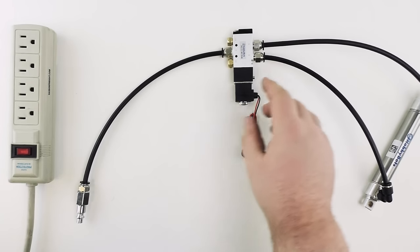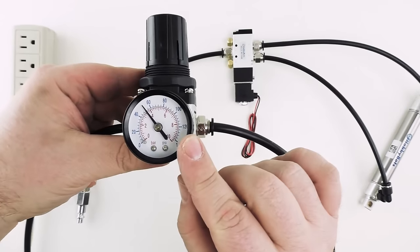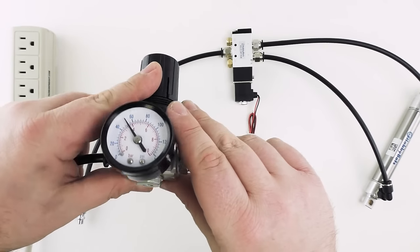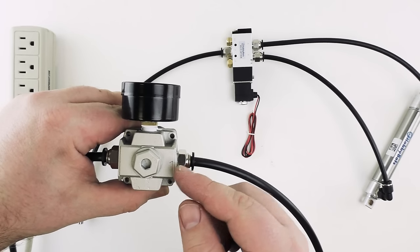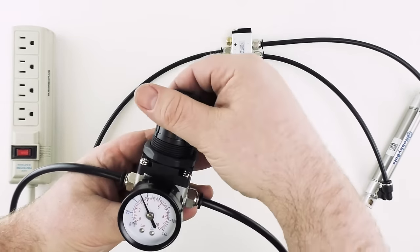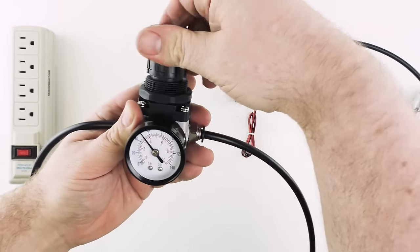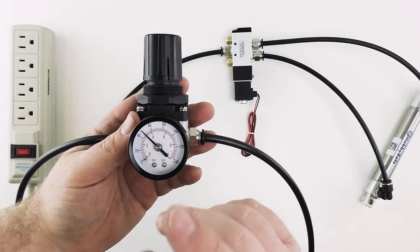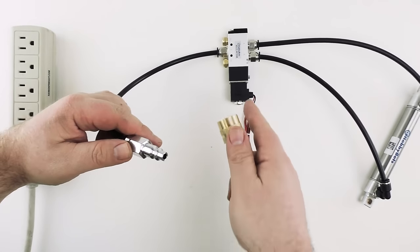Now the last thing we want to do before we connect air to our solenoid is check our air pressure. Your compressor may have a regulator like this one. If it doesn't we usually include one in our kits. To install it you simply make sure that you have air line coming from your compressor into the regulator and then out to your pneumatics. Turning the dial at the top of the regulator will adjust the air pressure. Somewhere around 40 to 50 psi will be fine for most pneumatics. General rule of thumb is to use as little pressure as possible to achieve your desired effect. Alright with our pressure set we can go ahead and hook our air up to our solenoid.